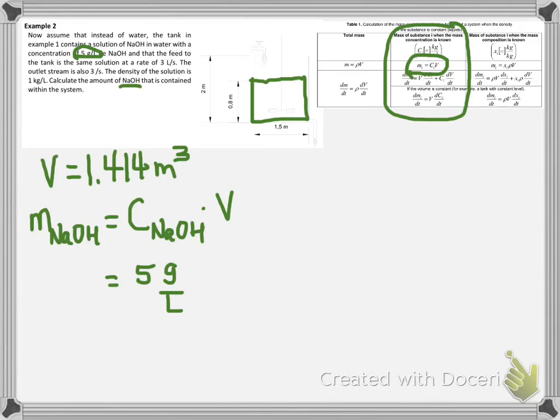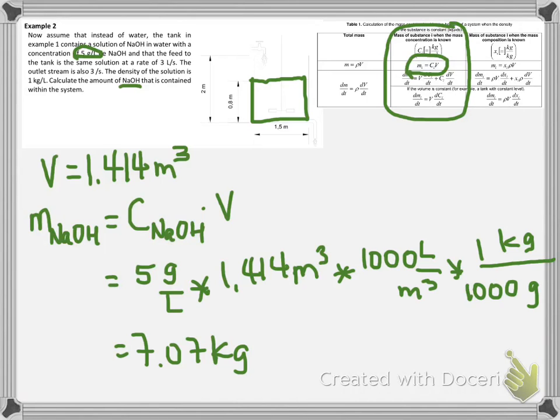and the volume is 1.414 cubic meters. So the mass inside of our system, the mass of sodium hydroxide, is 7.07 kilograms.